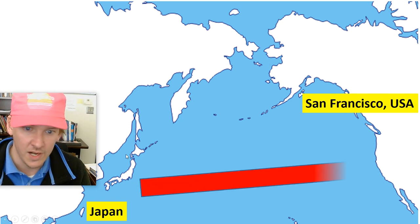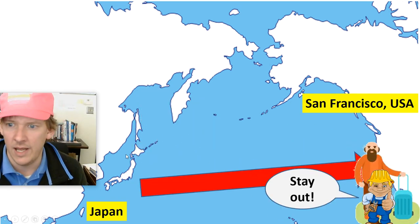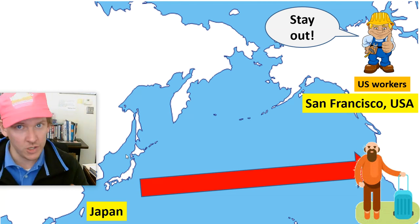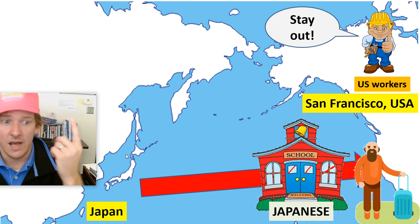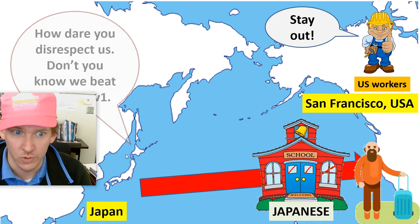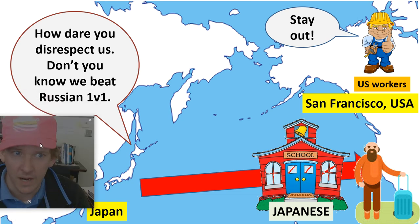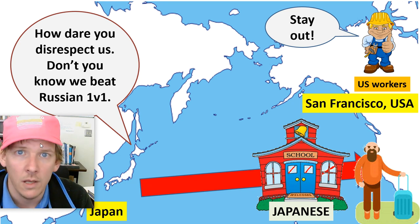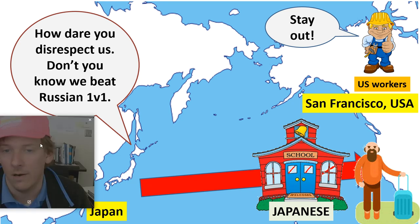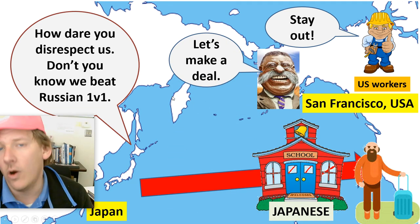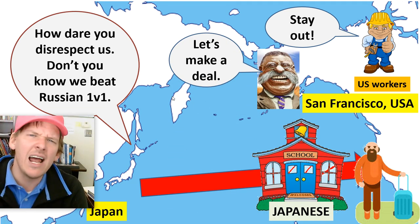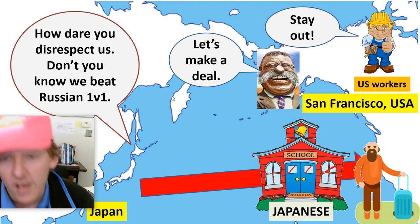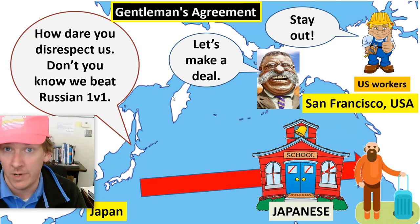The Japanese moved into the country, immigrating to San Francisco. U.S. workers, not wanting to compete or see their wages go down, tried to exclude the Japanese and made them go to separate schools. The Japanese were offended — how dare you disrespect us, don't you know we just beat Russia? And the president jumped in the middle and said he'd work it out and solve all the problems.